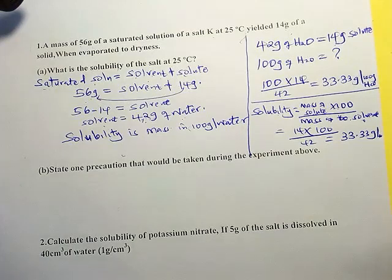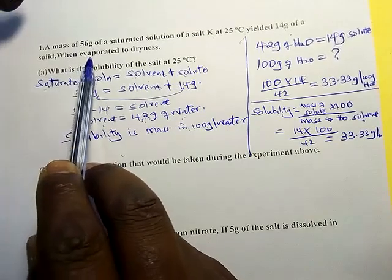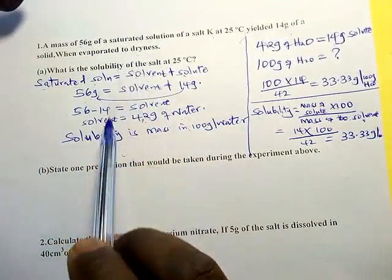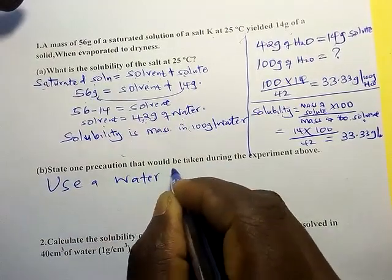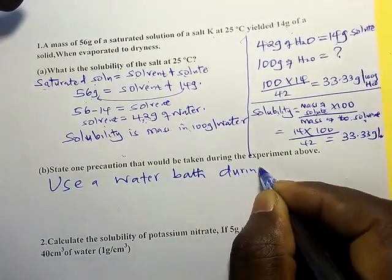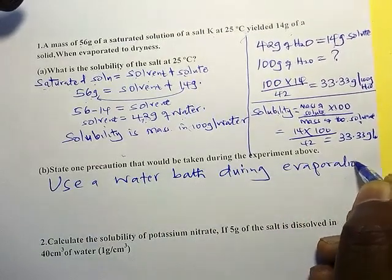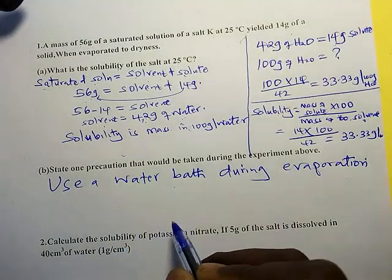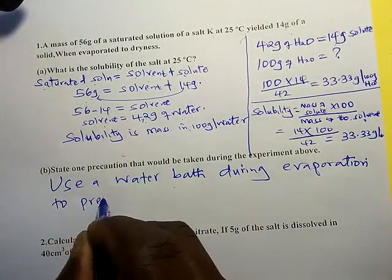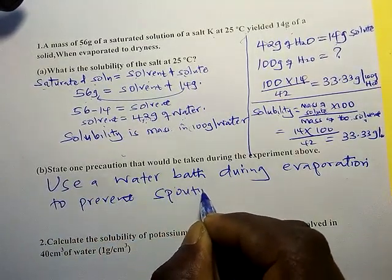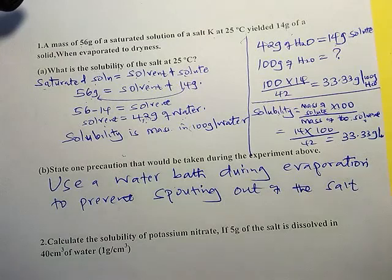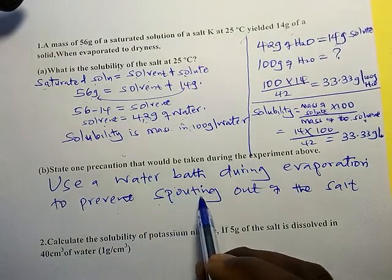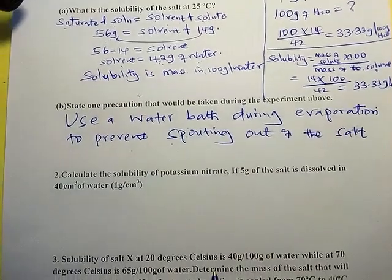State one precaution that could be taken during the experiment. When evaporating to dryness to get crystals, it is important to use a water bath. The precaution is: use a water bath during evaporation. This is to prevent spurting out of the salt, where the crystals jump out of the container as they form.